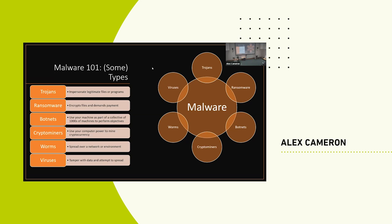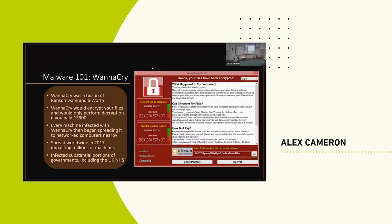A good example from the past five years — hopefully you recognize this from news articles and not from your computer screen. This is WannaCry, quite a nasty piece of work. This is the encryptor application that shows up when you're infected with WannaCry on your machine, and it really took over a good chunk of the world in 2017.